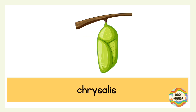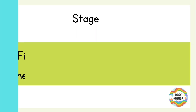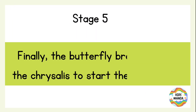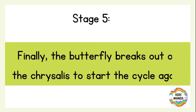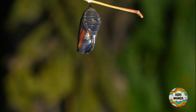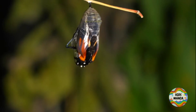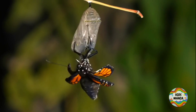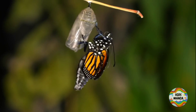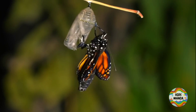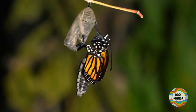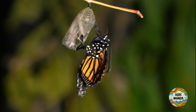This is a chrysalis. Stage five: finally, the butterfly breaks out of the chrysalis to start this cycle again. Can you see this beautiful butterfly coming out of the chrysalis? Isn't that amazing?